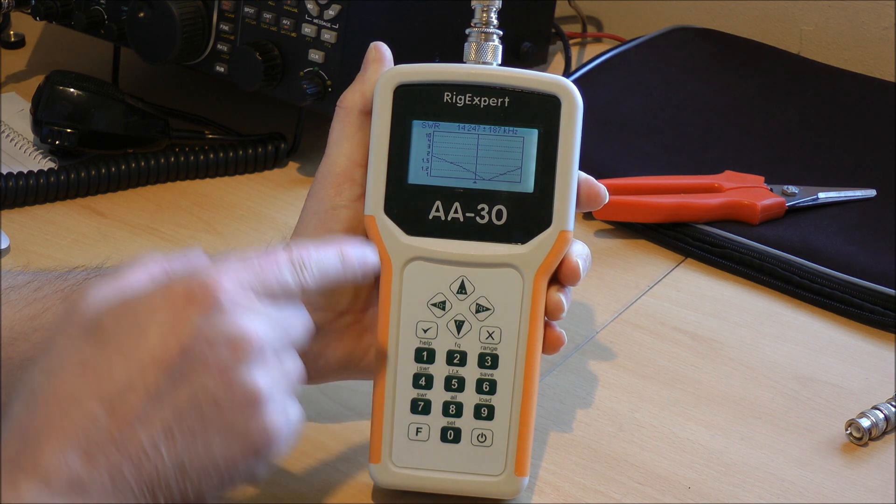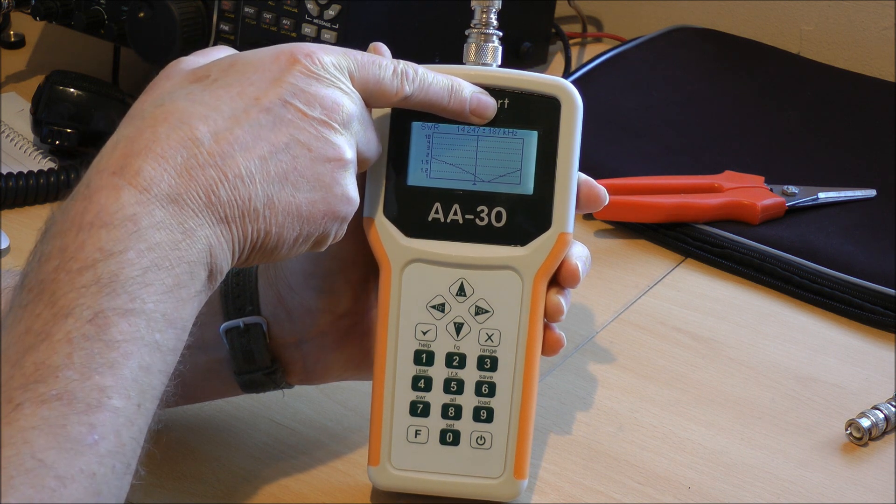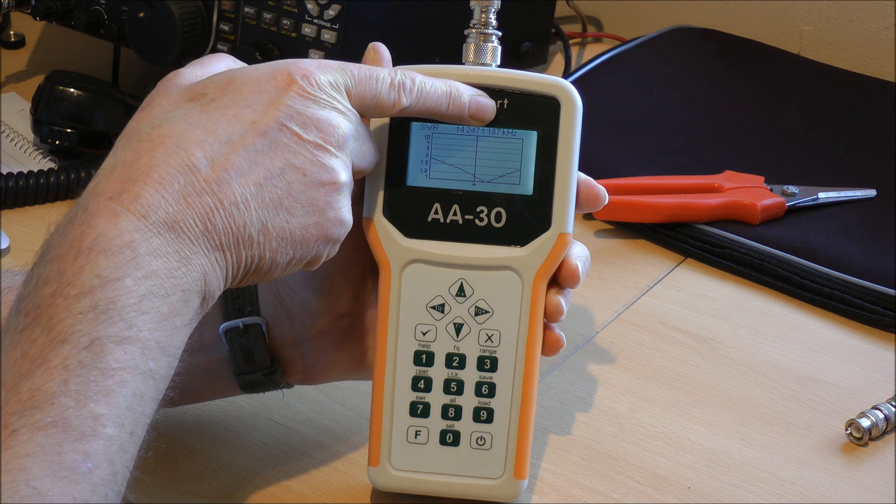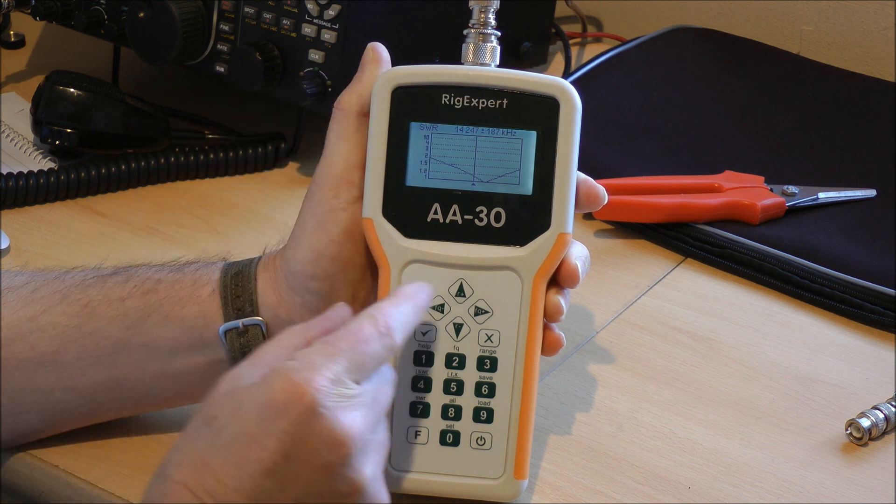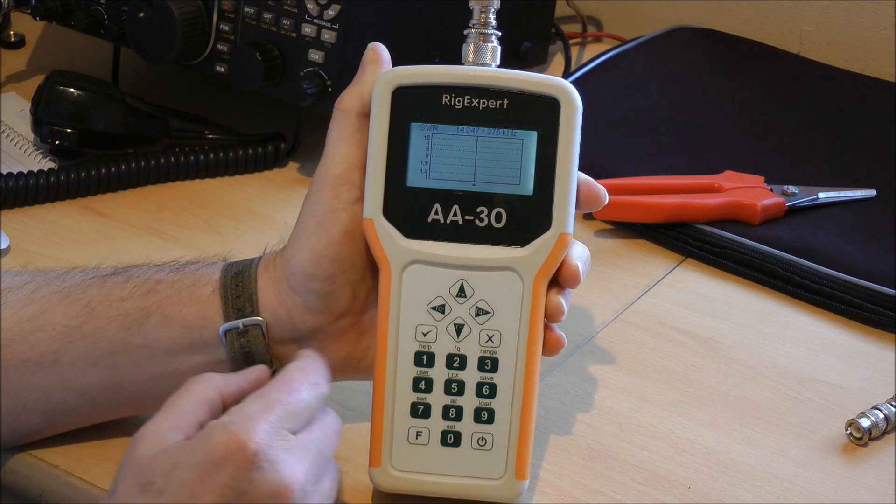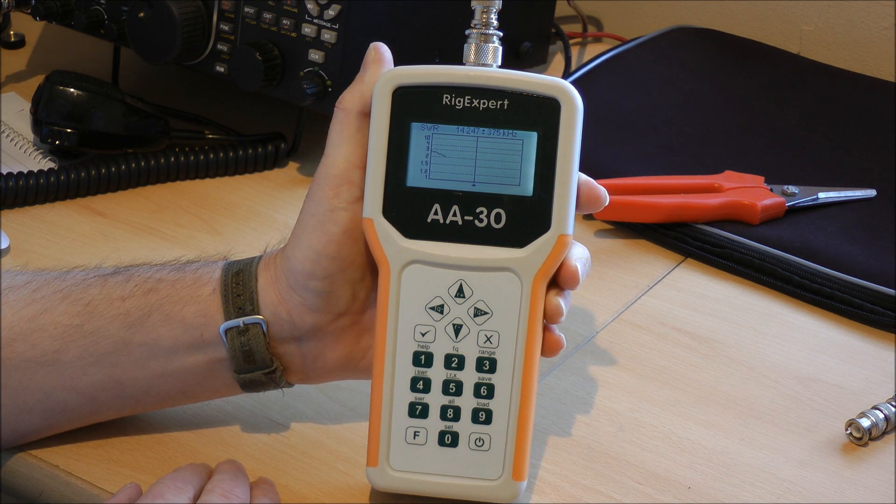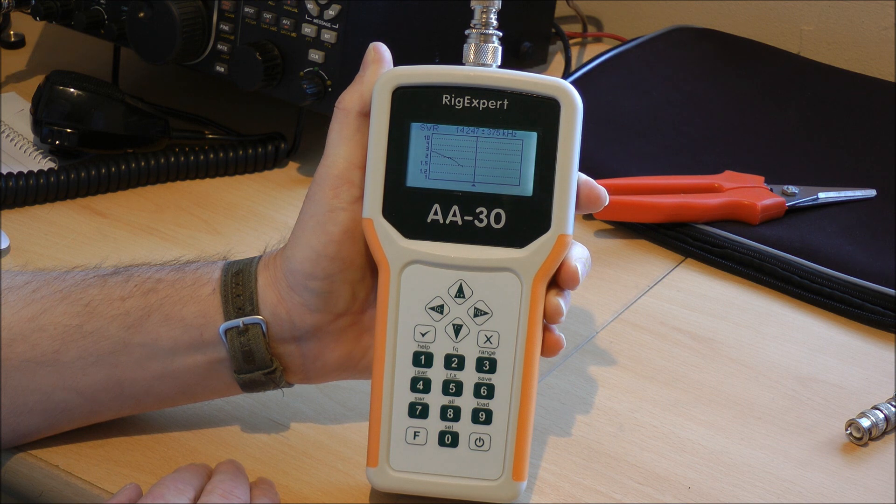If you look at the top here, you can actually alter the scan rate as well. It's currently 187 kilohertz. You can change the range of that using this one here. This is 375 kilohertz. Do the same thing again, you see a slightly different shape now over a wider range of frequencies.